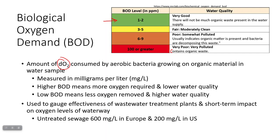When you have untreated sewage, in Europe it's got a BOD of about 600 milligrams per liter. In the U.S. it's about 200 milligrams per liter — that just has to do with how watery our wastewater tends to be. When you have efficiently treated sewage, the value should go down to less than 20 milligrams per liter, which is about a tenth of the U.S. value and even smaller compared to Europe.